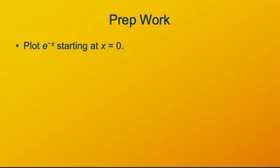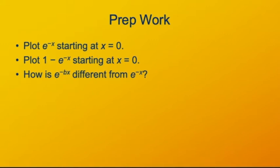To start off, plot e to the minus x starting at x equals zero. What does that look like? Once you've got e to the minus x, plot one minus e to the minus x starting at x equals zero. Next, consider what happens when you change the exponent to e to the minus bx, considering the cases where b is greater than one or b is less than one.